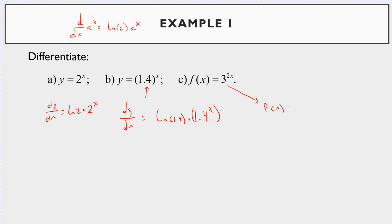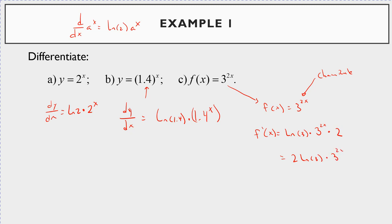Now for f(x) = 3^(2x), notice the exponent is 2x, not just x, so you need to use the chain rule. f′(x): the base is 3, so you get ln(3) times 3^(2x), times the derivative of the exponent — the derivative of 2x is just 2. So you can write this as 2·ln(3)·3^(2x).